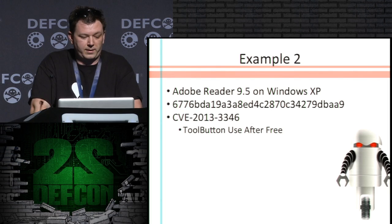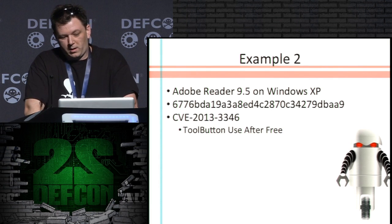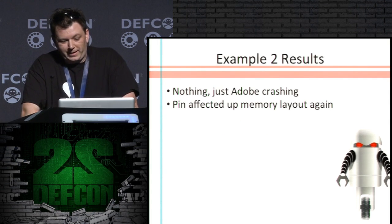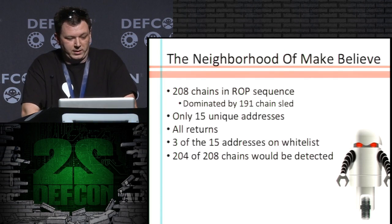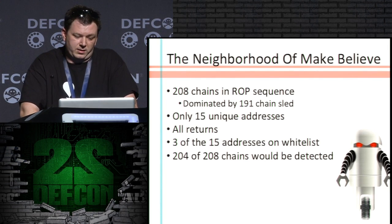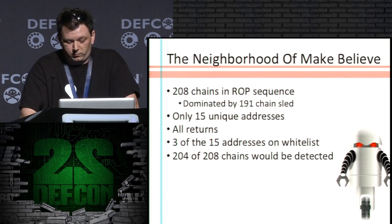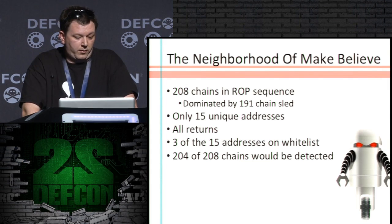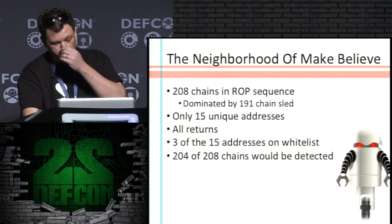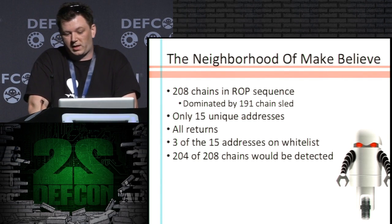Example two: Adobe 9.5, also on Windows XP, a more recent vulnerability from late last year. Unfortunately, I didn't get anything — PIN was messing up the memory layout again despite my best efforts. So we have to go to the make-believe again. This one actually had a huge ROP sequence: 208 chains, but dominated by a NOP sled — essentially returning to itself over and over. Fifteen unique addresses this time, all returns. Again only three were on the whitelist. Of all the chains, we detected 204 out of 208, so we seem to have about the same detection rate on the address part.